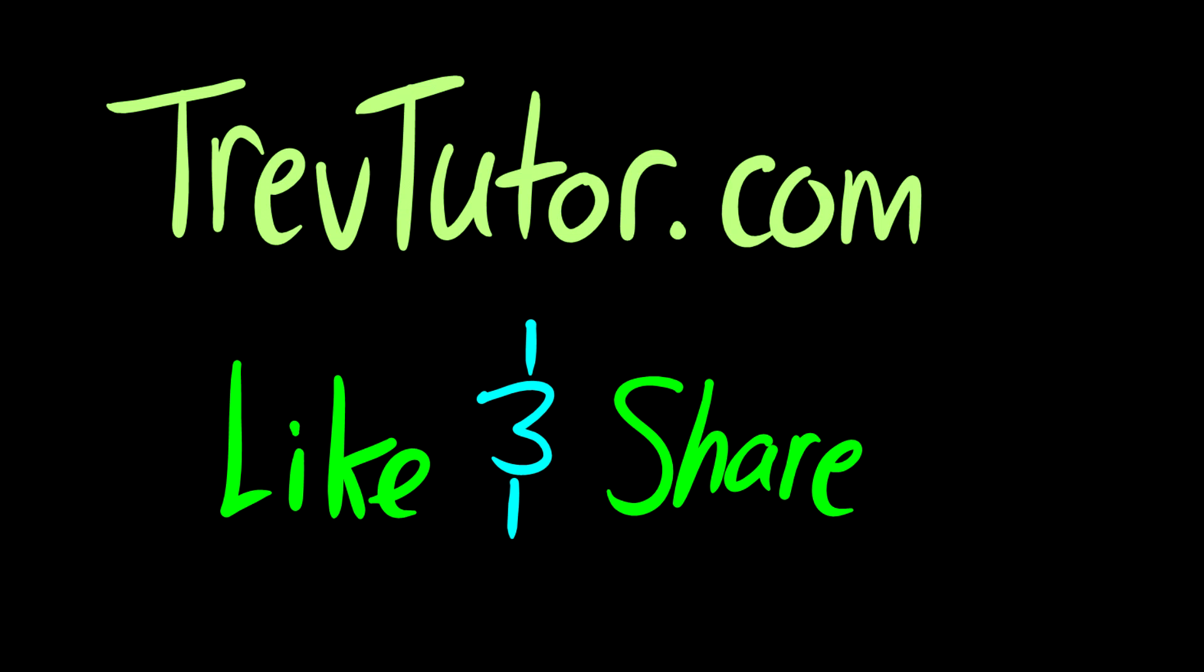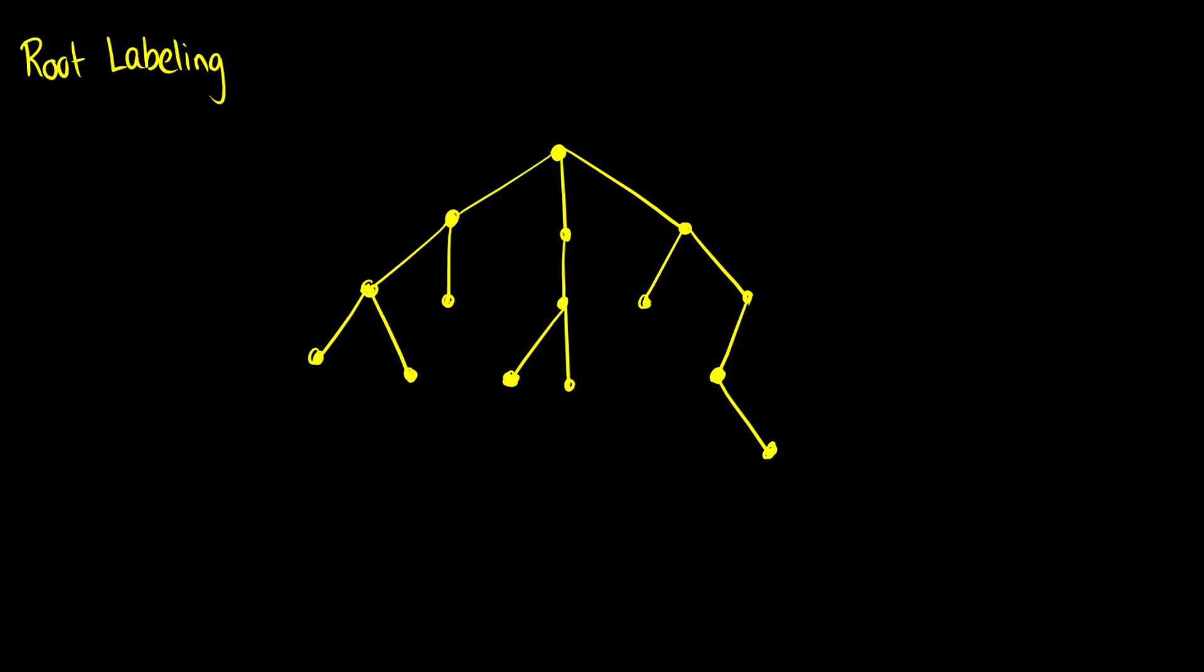Welcome back to Discrete Mathematics. Today we're going to take a look at tree directories and traversals. First we're going to take a look at root labeling, which is basically when we take a tree, pick a root node - the top node - and lift it up out of the paper to see where everything else falls. We get a tree that keeps splitting downward.